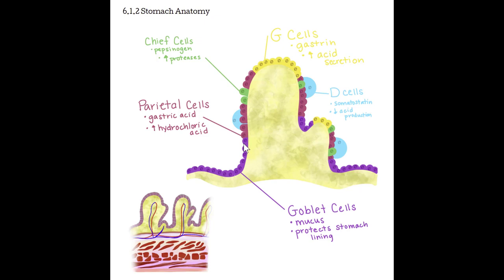Parietal cells are responsible for making gastric acids — specifically hydrochloric acid. Chief cells detect proteins within ingested food and make pepsinogen, which tells the pancreas to start making proteases to break down proteins. G cells are responsible for releasing gastrin. They recognize that food has entered and tell the stomach to increase acid secretion — so G cells tell the parietal cells to start making hydrochloric acid. D cells, or delta cells, also found in the pancreas, make somatostatin. D cells monitor how full the stomach is, and when we don't need the hydrochloric acid anymore, they activate and tell the parietal cells to slow down acid production.